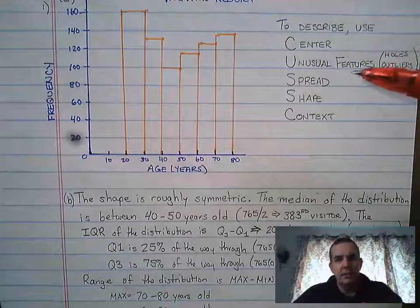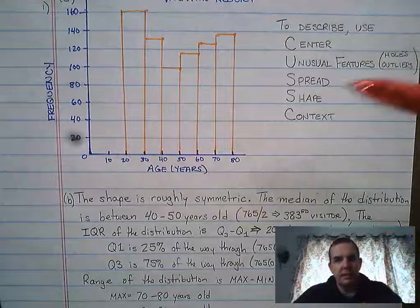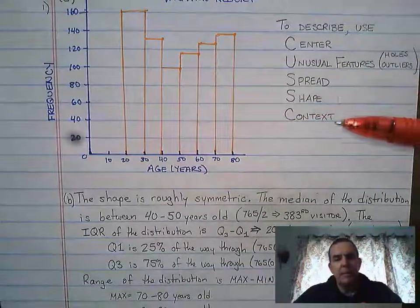CUSSC: center, unusual features (those are holes and outliers), spread, shape, and context.